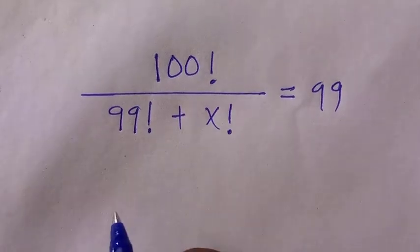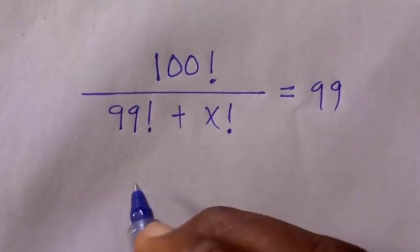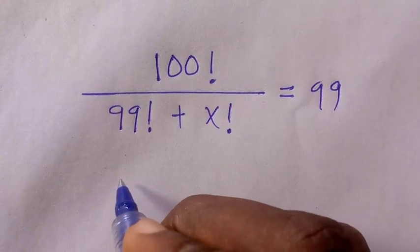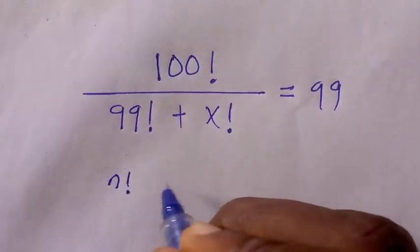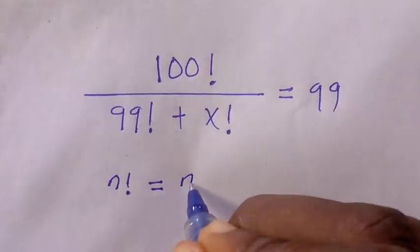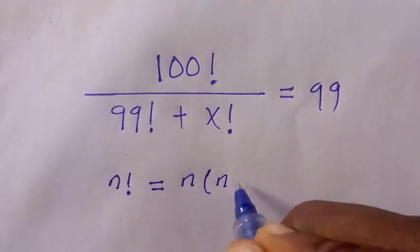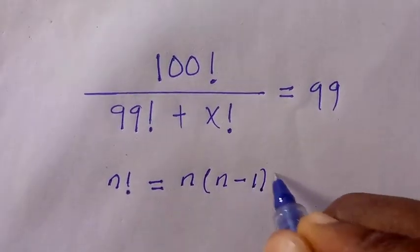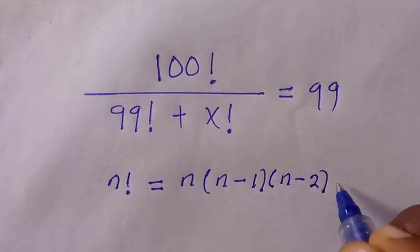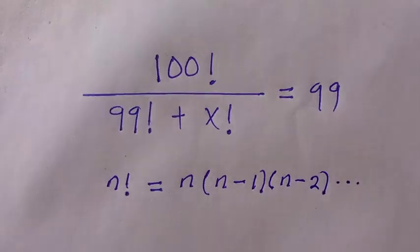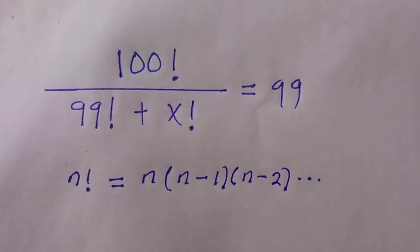We are going to consider factorial notations. Suppose we have n factorial. This is given as n bracket n minus 1 bracket n minus 2. It continues like that till as many as the number we are given.